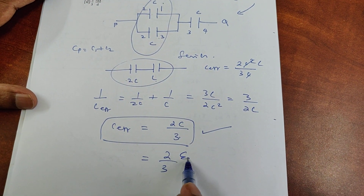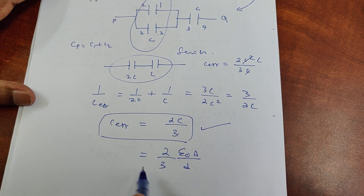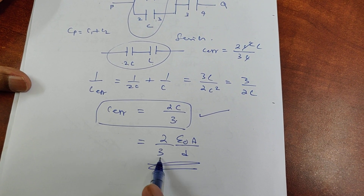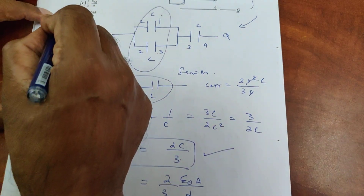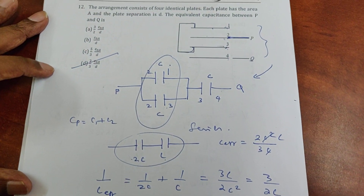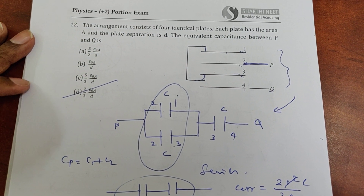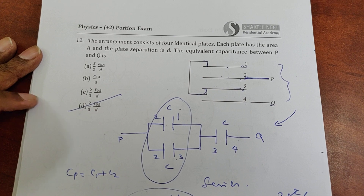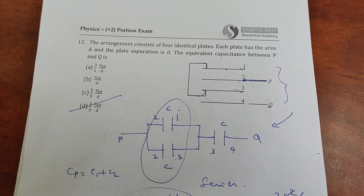Each individual capacitor is ε₀A/D. Therefore the effective capacitance between P and Q is (2/3)(ε₀A/D), which is option D. Thank you for watching, students. I will meet you in the next video.